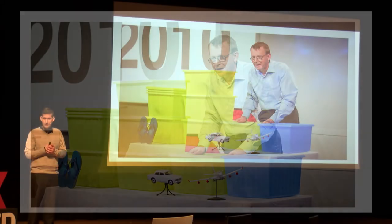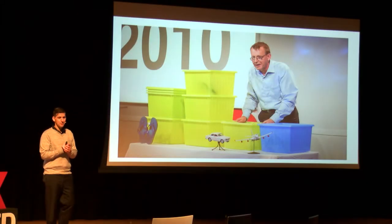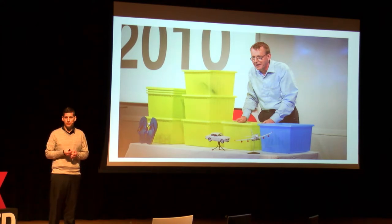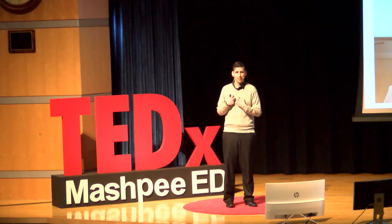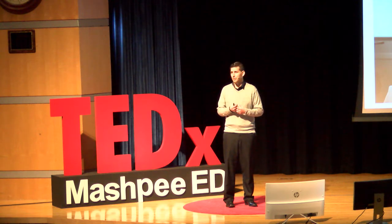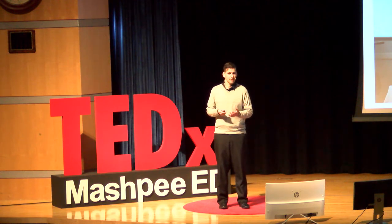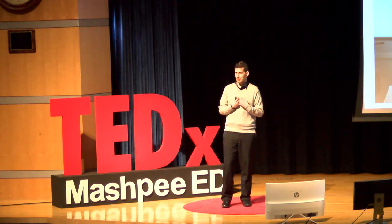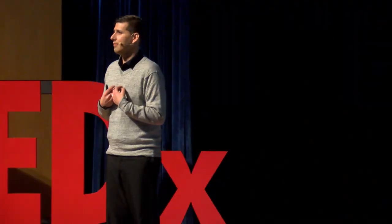Hans Rosling, pictured here, is a TED legend. He's given some fantastic talks, and he's polled people for years, giving them questions about basic global statistics. As a geography professor, I'm not shocked that a lot of his research has shown that people don't know the basic facts about the world. But it's not just that they don't know the basic facts — the problem is that we're systematically wrong. I give this same quiz to my students, and they fail miserably.